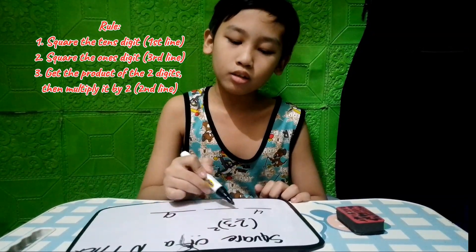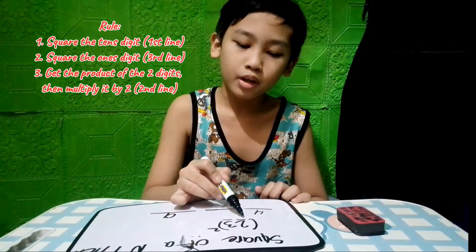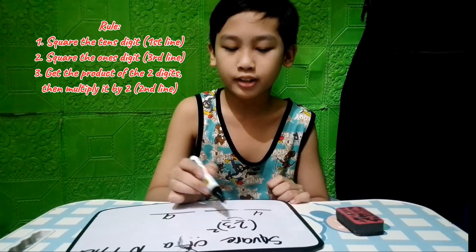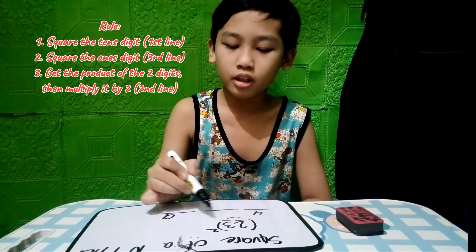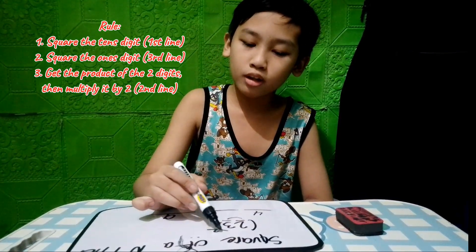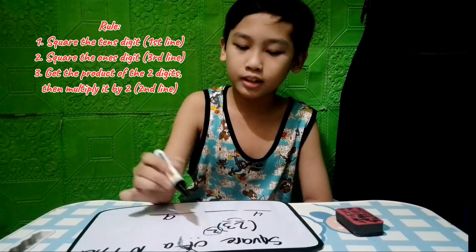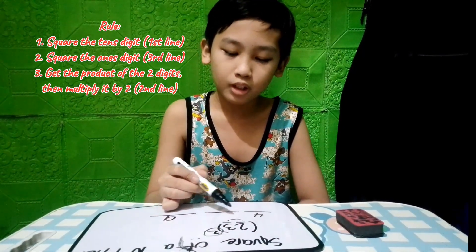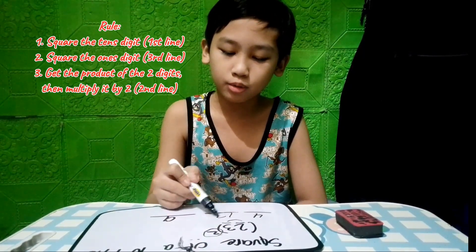To get the middle part, you have to multiply the digits. 2 times 3 equals 6. And then you have to multiply 6 by 2. So 6 times 2 is 12.